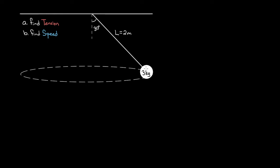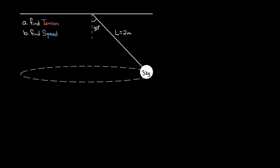This mass is going to maintain a constant height — it's not moving upward or down, but it revolves in a horizontal circle. Viewed from above, you'd see the ball tracing out a perfect circle. The questions I want to ask are: what is the tension in the rope, and what has to be the speed of the mass? The given variables are: mass is 3 kg, rope length is 2 meters, and the rope makes an angle of 30 degrees with the vertical.